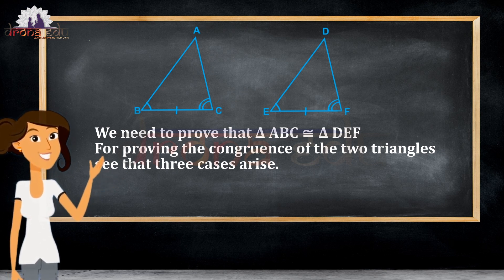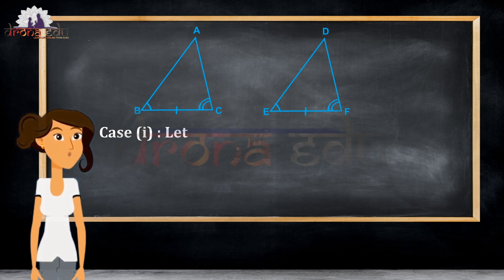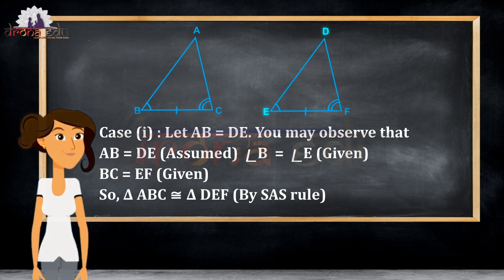For proving the congruence of these two triangles, three cases will arise. The first case is: let AB equals DE.